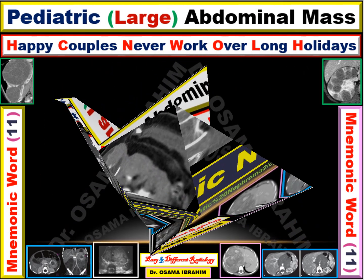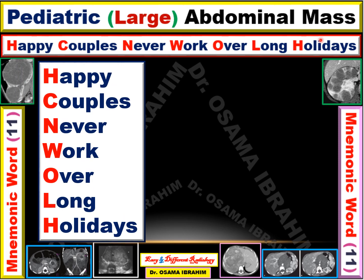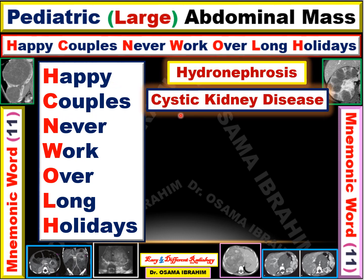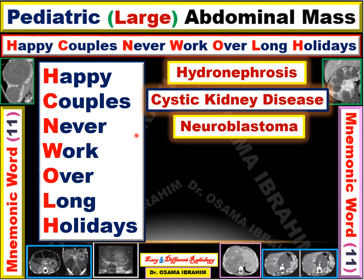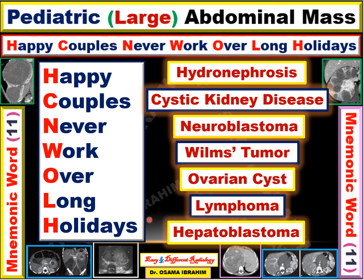The mnemonic 'The Happy Couples Never Work Over Longer Days' helps remember the causes of large abdominal mass in the pediatric age group. H for Hydronephrosis, C for Cystic kidney disease like multilocular cystic nephroma, N for Neuroblastoma, W for Wilms tumor, O for Ovarian cyst, L for Lymphoma, and H for Hepatoblastoma. These are the most common causes of large abdominal mass in the pediatric age group.